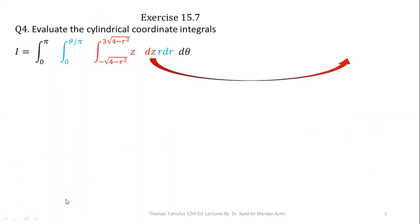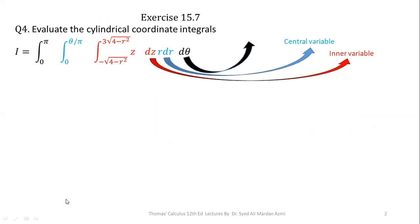Here we have three variables: dz, dr, and d-theta. In cylindrical coordinates, the innermost variable is Z, the middle variable is R, and the outermost variable is theta. This arrangement is fixed in cylindrical coordinates — we always take Z as the inner variable, R as the central variable, and theta as the outer variable. We follow this order in the process of integration: first integrate with respect to Z, then with respect to R, then with respect to theta.